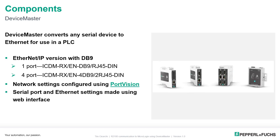The device master selection process is the first thing you want to look at. We actually sell multiple versions: a device master with terminals, a device master with a DB9, and also a four-port device master unit. Additionally, you can buy them with different protocols — for example, Ethernet IP, Profinet, or Modbus TCP. Because the R2100 has a serial cable with a DB9 connector, I opted for the DB9 version.